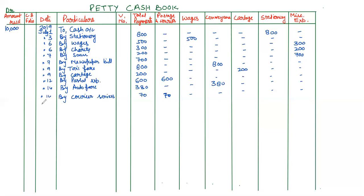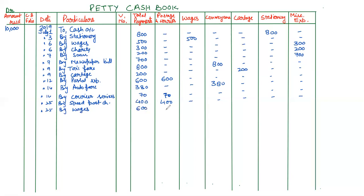Next is the 25th — speed post charges. By speed post charges, 400 rupees will come in the total payment column. This is one of the facilities provided by the post office, so it will come in the postage and courier column also. On the same day, by wages, 600 rupees — and we have a separate column for this also.